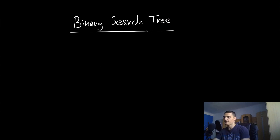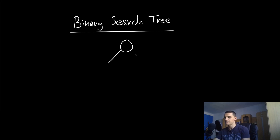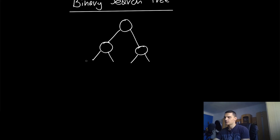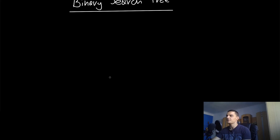As the name already suggests, we have a binary tree here that has a certain additional property. A binary tree is essentially just a tree where each node has two children — the left child and the right child — and these nodes of course have a left and a right child as well, until we get to the leaf nodes where you essentially have no children.